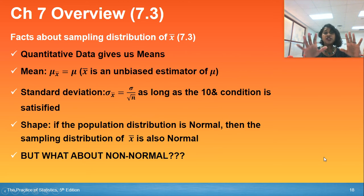And finally, chapter 7.3, our first little slide deals with all the math kind of stuff, quantitative data. We're dealing with means. That means the mean of my X-bar will be the mean of my population. Remember that X-bar is an unbiased estimator. So here's the formula for standard deviation as long as your 10% condition is satisfied and if your population distribution is normal, so should your sampling distribution. But what about non-normal?